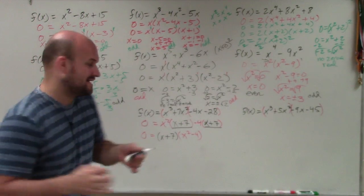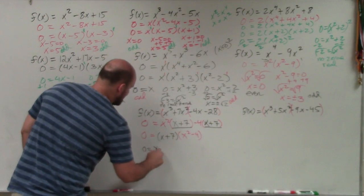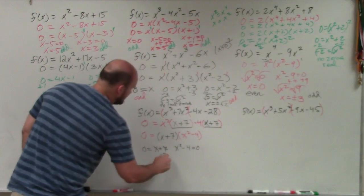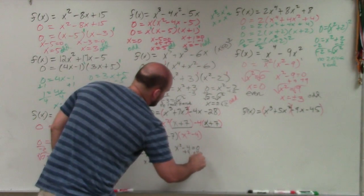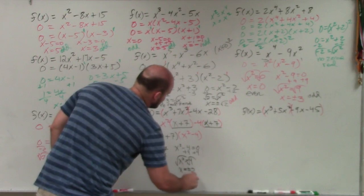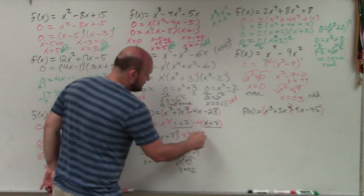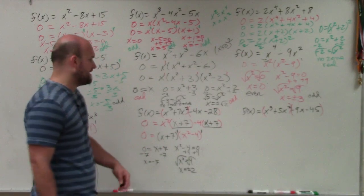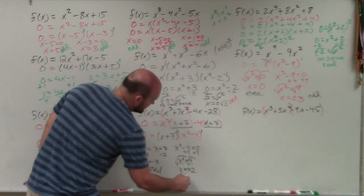Setting each factor equal to 0: x plus 7 equals 0 gives x equals negative 7. For x squared minus 4 equals 0, add 4 to get x squared equals 4, then take the square root to get x equals plus or minus 2. Going back to the powers of our linear factors, even though x squared minus 4 has a squared inside, the outer multiplicity is still 1. So it's going to be odd multiplicity for all of these zeros.